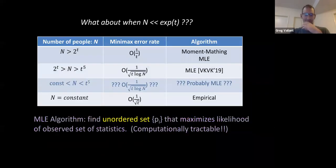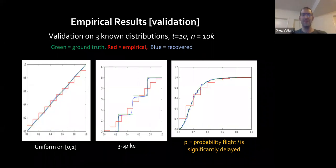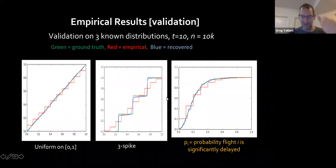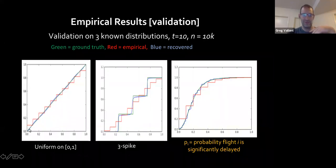I'll skip the sketch of proof for this result. It basically looks like the earlier proof but instead of going via standard moments it goes through moments with respect to Bernstein polynomials. Let me quickly discuss some of the empirical results. Even the moment-matching algorithm works quite well in practice. Here are three different synthetic settings showing the CDF: the green is the ground truth CDF, so for a uniform distribution over zero to one the CDF is just a straight line.